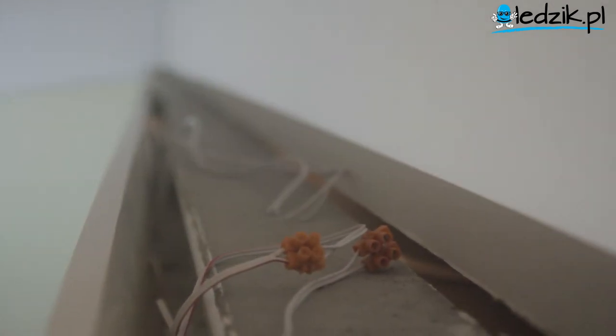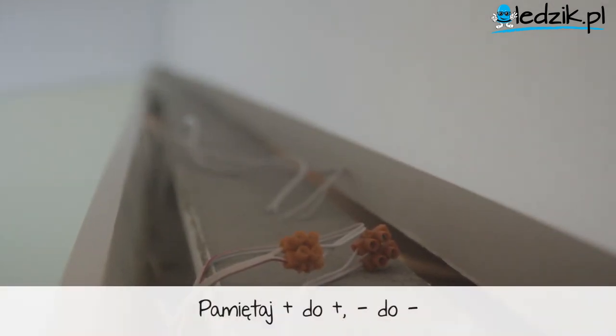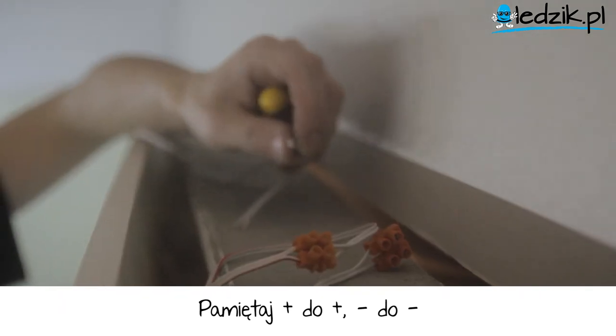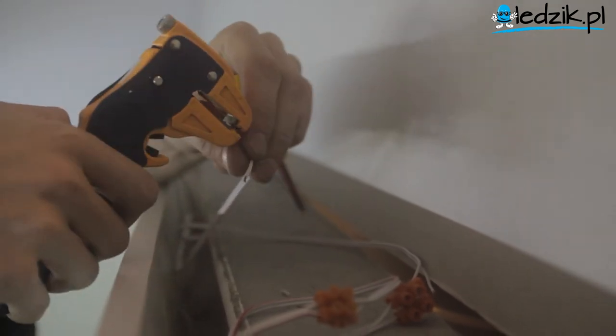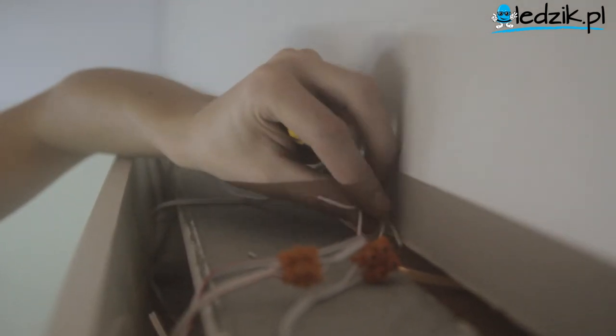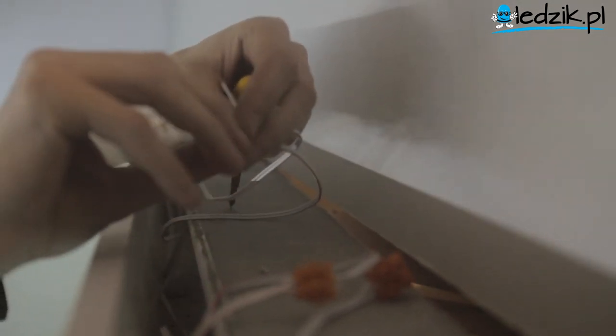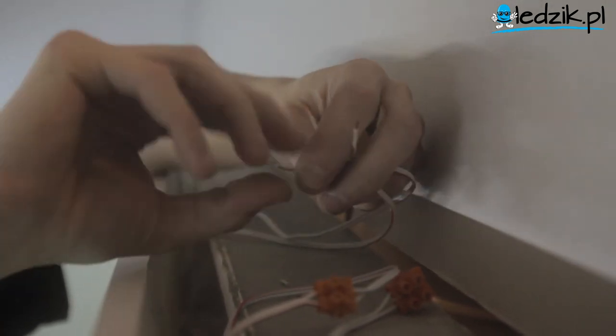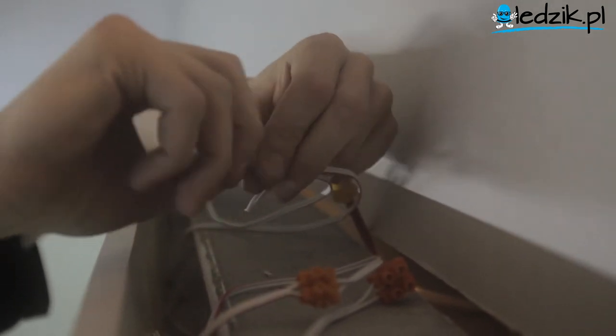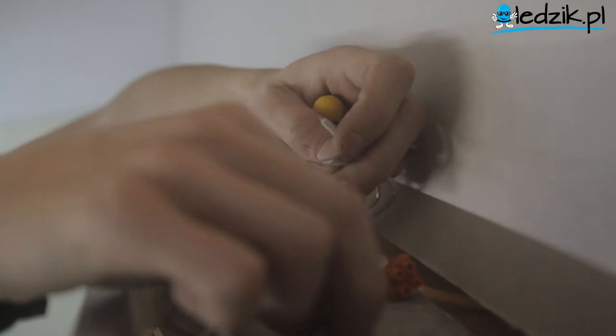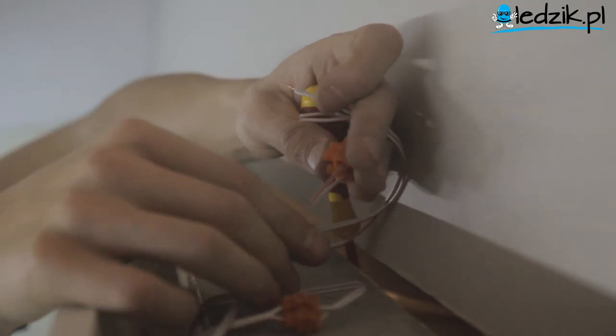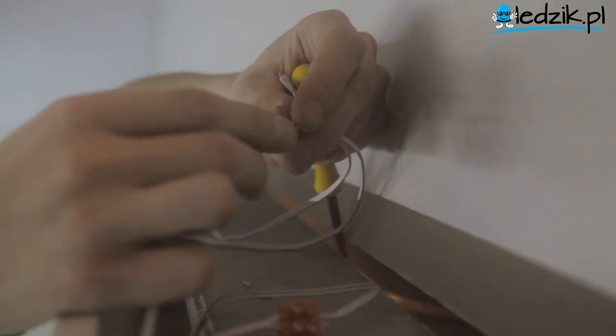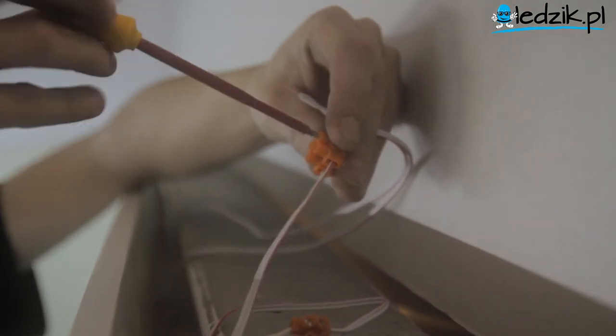Następnie podłączamy zasilanie 12 V do kontrolera. W tym przewodzie znajduje się doprowadzone przeze mnie zasilanie 12 V z naszego transformatora, którego pokazywałem.